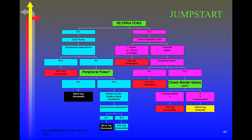The JumpSTART system is meant specifically for pediatric patients and is set up very similarly, but with some particular changes. The respiratory rate, instead of being greater or less than 30, for a pediatric patient we're looking at a rate between 15 to 40, or if it's irregular. Please pull up the PDF file provided to see the full differences.